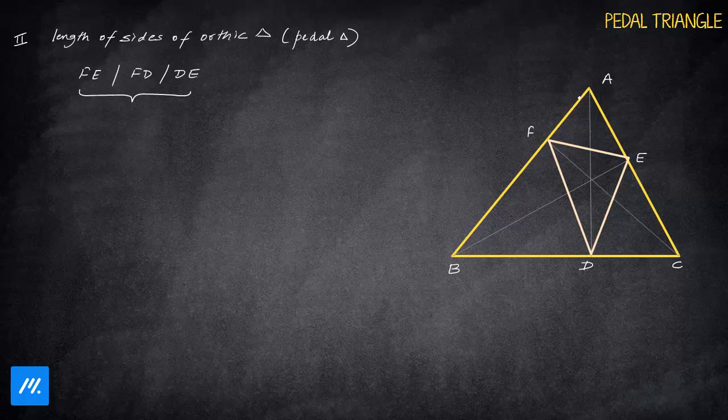Now for this, I am going to take quadrilateral A, F, H, E. Notice that it is a cyclic quadrilateral. Can you tell me why it is cyclic? It is again a cyclic quadrilateral.